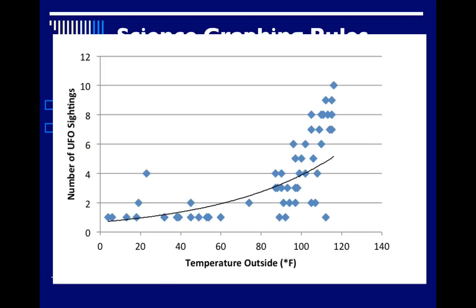So here we have a line graph and you can see initially data points were plotted. And then at the end someone drew a line of best fit through those data points which is absolutely appropriate for a science graph. Now if we take a look and examine the axes,